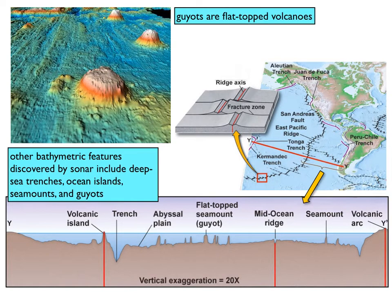Also discovered thanks to sonar were other interesting features on the seafloor, like guyots, which are flat-topped volcanoes, and really deep abyssal plains. We also discovered that the ocean has huge trenches, seamounts, and all sorts of really neat features. So the ocean floor, even though we can't see it, is full of features — and we know that thanks to original sonar detection.